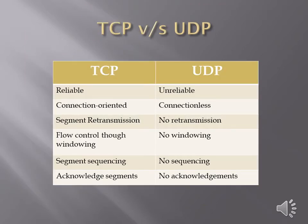TCP vs UDP: TCP is a reliable protocol while UDP is an unreliable protocol. TCP is connection-oriented whereas UDP is connectionless. In TCP, segment retransmission is possible, whereas in UDP there is no retransmission. Flow control through windowing is possible in TCP; in UDP there is no windowing. Segment sequencing is possible in TCP — every segment transmitted to the destination has a sequence number — but UDP does not use sequence numbers.